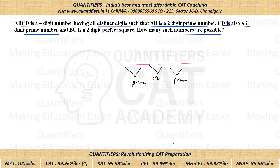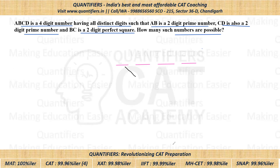The best way to solve this — the important thing is how to start the question. Some students start doing hit and trial, but then there are high chances of missing some cases. To be sure you've covered all cases, the best way is to start with the condition that BC is a two-digit perfect square.